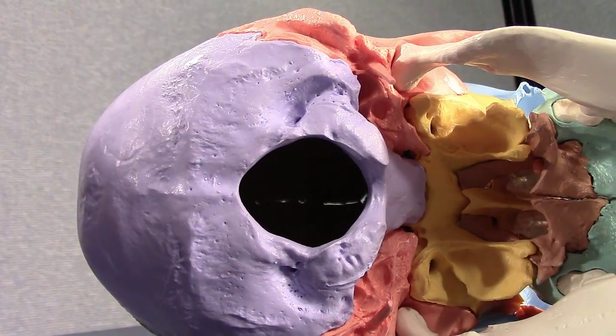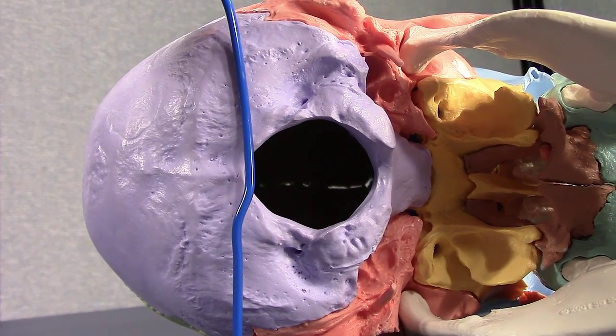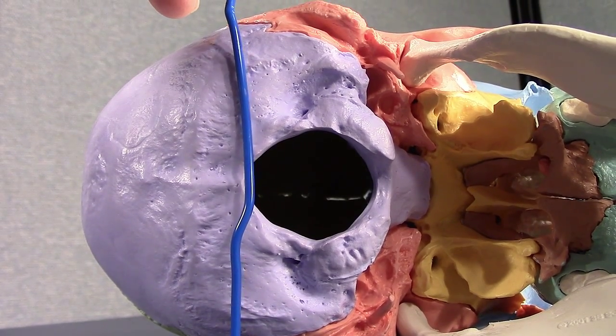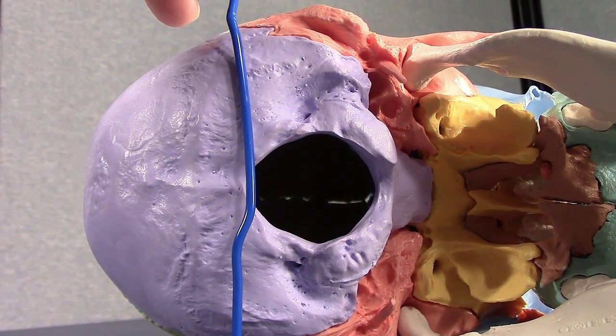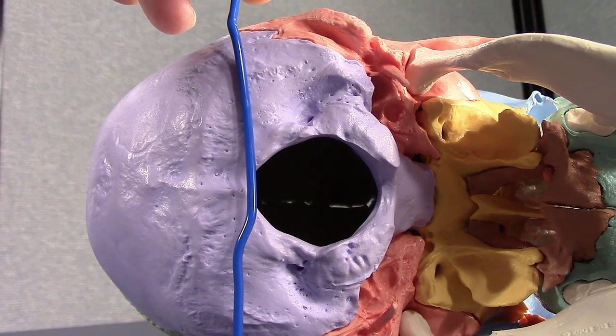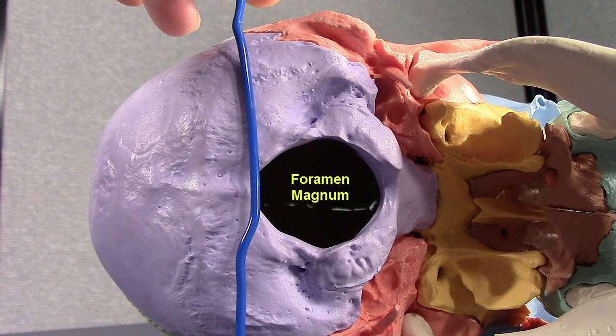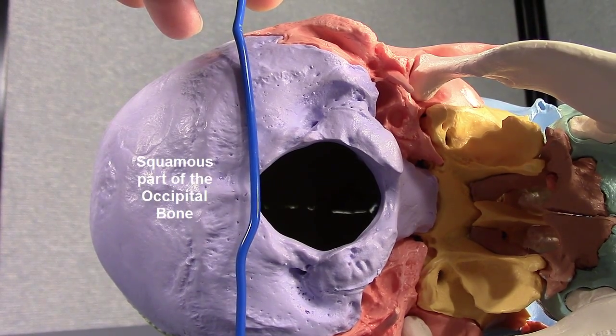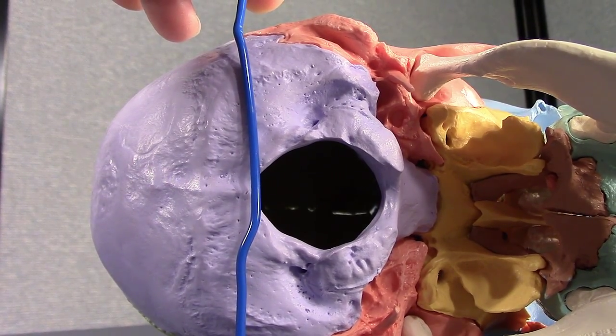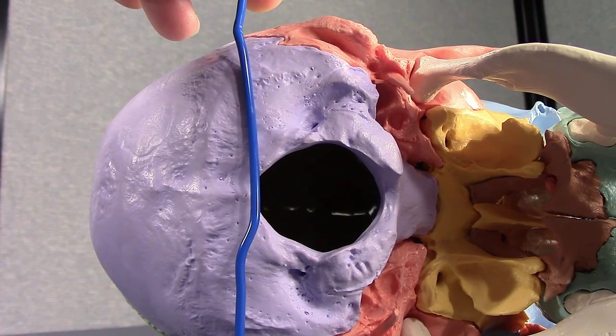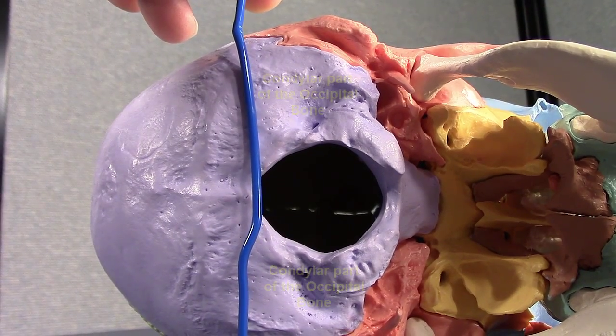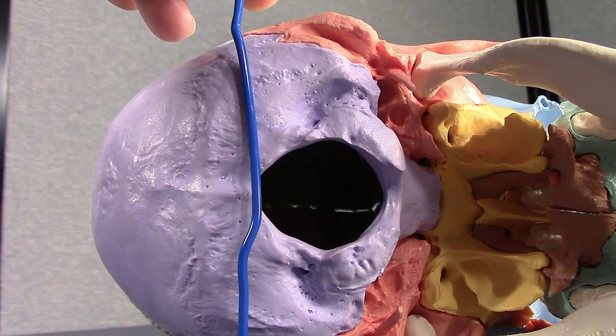So squamous stops about at this line. If you draw a line here, kind of vertical line right through the posterior part of the, what's that big hole called? Foramen magnum. Then everything to the left is squamous. Now everything laterally to that hole, which would be above in this region here, this is all called the condylar part, condylar part of the occiput.